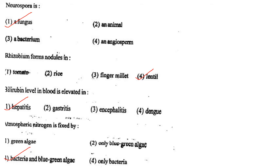Next one: Rhizobium forms nodules in option 1, tomato; option 2, rice; option 3, finger millet; option 4, lentil. Answer is option 4: lentil.